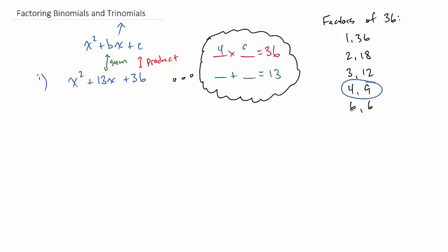So you think about it for a bit. You see, okay, 4 and 9. Four times nine is 36, and four plus nine is 13. And you break your trinomial apart into two binomials. We're done.